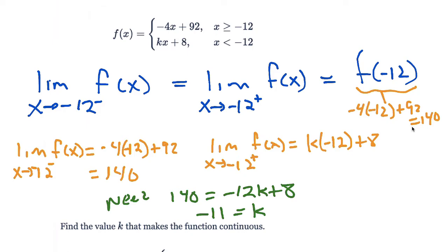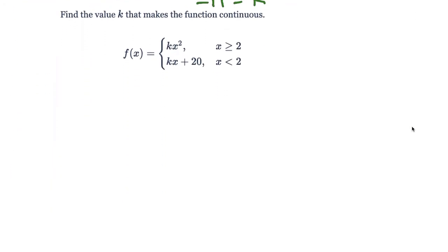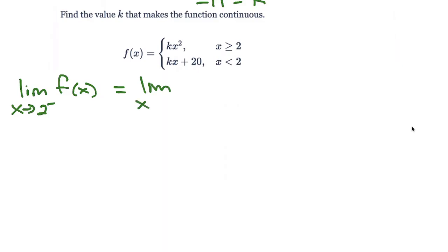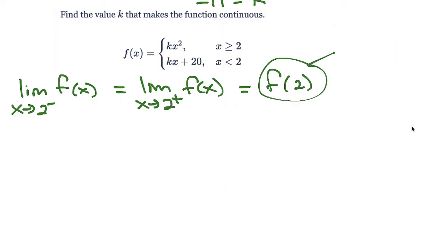Let's do another example. Same idea. We need the limit as x goes towards 2 from the left-hand side to equal the limit as x goes towards 2 from the right-hand side to equal f of 2. We know f of 2 — using this piece — is k times 2 squared, or 4k.